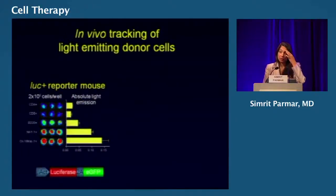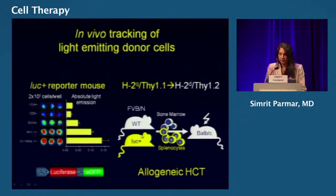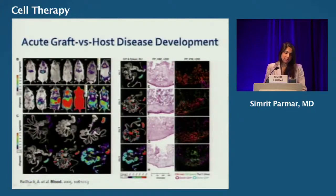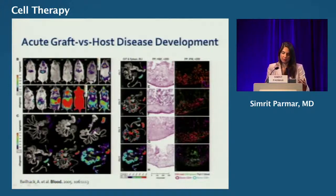This is a mouse model in which donor T cells have been tagged with luciferase reporter genes, so you can pick up the signal via imaging techniques. In a syngeneic transplant you don't see much activity, but in an allogeneic transplant you see how the T cells proliferate and ultimately lead to death of the mouse. In the gut of an allogeneic mouse there is significant uptake in the Peyer's patches and in the area of endothelial damage, correlating with tissue destruction seen by histochemical staining.